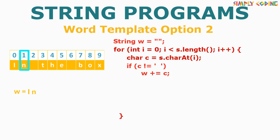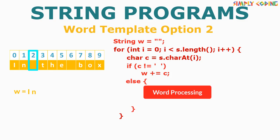We will continue traversal till we get a space. A space means we have a complete word and now we can do word processing as required in our program. An important thing we need to do after processing is set our variable w to blank so that we can fill it up with the next word. This is important. Otherwise, the next word will just get concatenated to the previous word, which will be wrong.